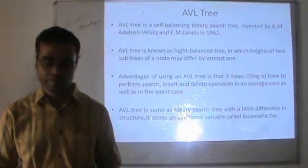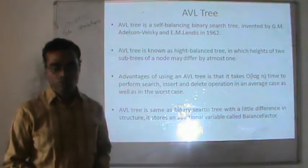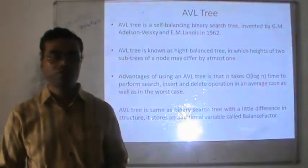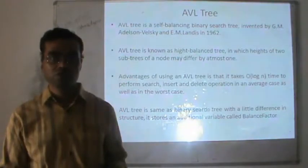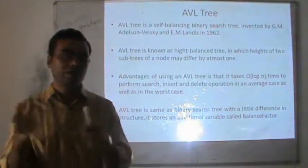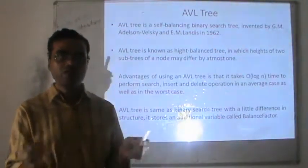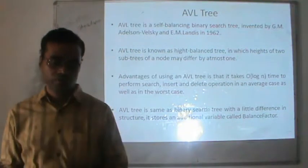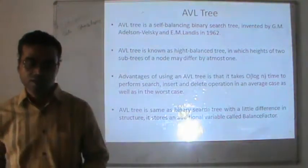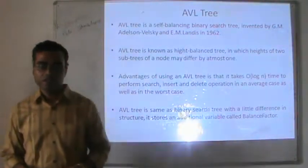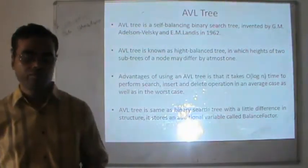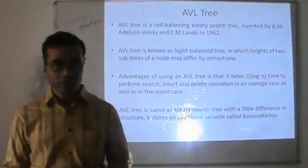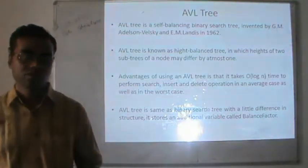The balance factor is interpreted as the difference in height of the two subtrees of a node. The height of the left subtree minus the height of the right subtree can be either minus one, zero, or one. The advantage of using the AVL tree is that it takes O(log n) time to perform searching, insertion, and deletion in the average case as well as in the worst case.